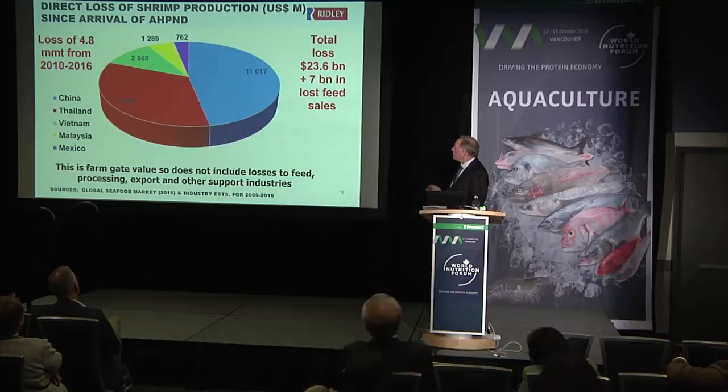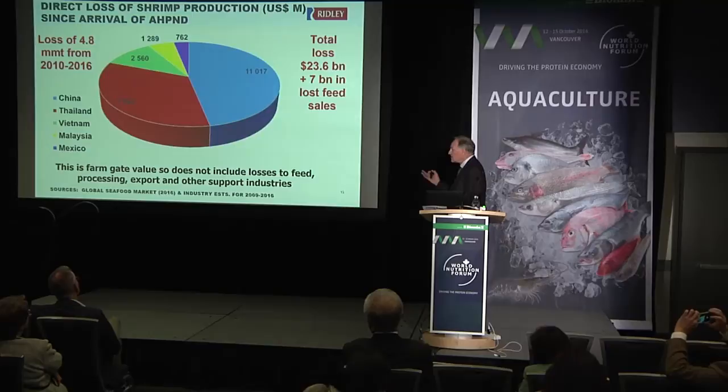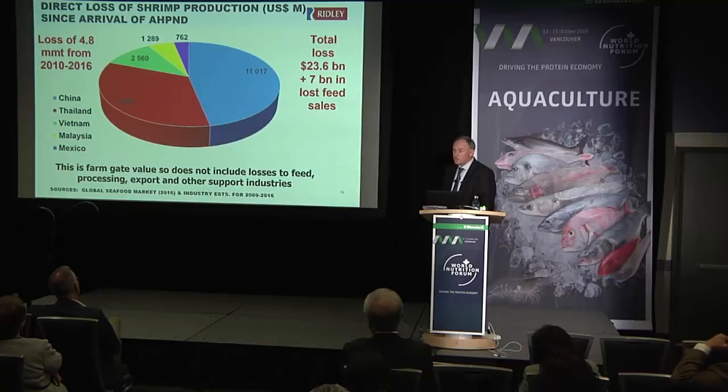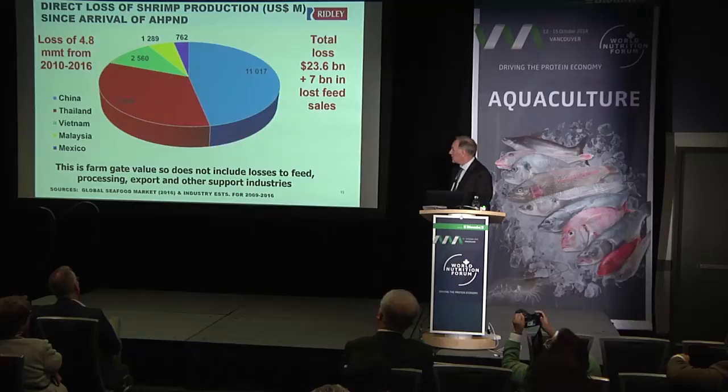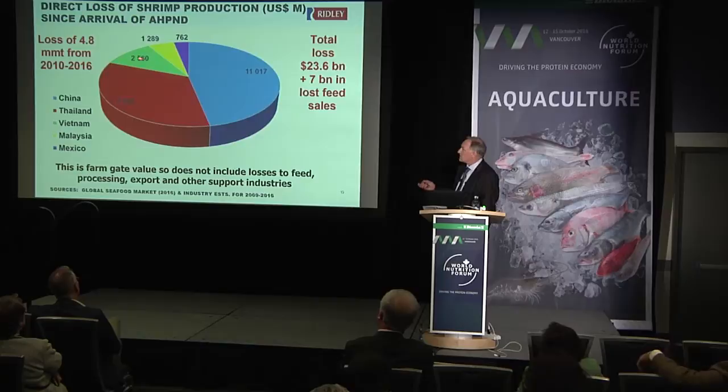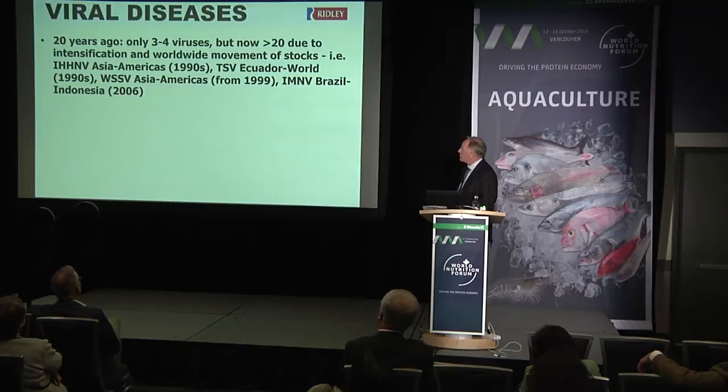That figure breaks down to about $23.6 billion — just in lost production, meaning shrimp that have either died or not been produced as a result of EMS and other diseases. You can add at least $7 billion in lost feed sales, plus additional losses in unemployment, processing, marketing, and distribution of product that is not being produced right now. A lot of this originates from losses in China, Thailand, and to a lesser extent Vietnam, Malaysia, and Mexico.